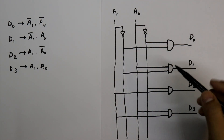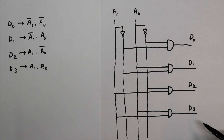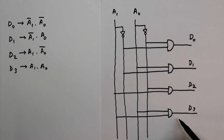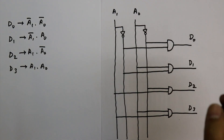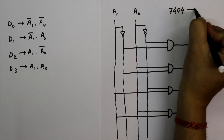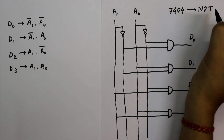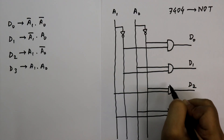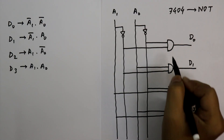This is our 2-to-4 line decoder. Now we will make this circuit on a breadboard. We have two types of gates: NOT gate and AND gate. For the NOT gate I'm using IC 7404, and for the two-input AND gate I am going to use IC 7408.